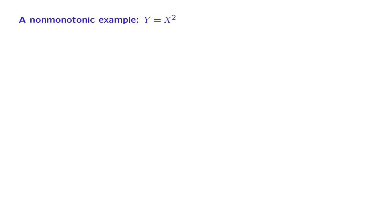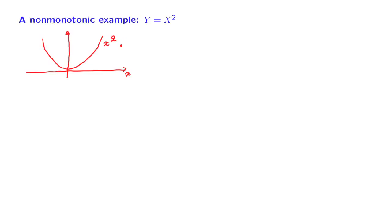All of our examples so far have involved functions g(x) that are monotonic in x, at least over the range of x's of interest. Let us now look at an example that involves a non-monotonic function. We're going to consider the square function, which has the shape shown in this diagram, and we will assume that x has a general distribution so that it can take both positive and negative values. Over the range of values of x, the function is decreasing and then increasing, so it is not monotonic.